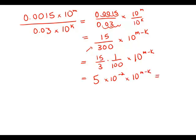And what this should be equaling is 5 times 10 to the 7th. So this means that 10 to the m minus k minus 2 equals 10 to the 7th, or m minus k minus 2 equals 7, or m minus k equals 9.